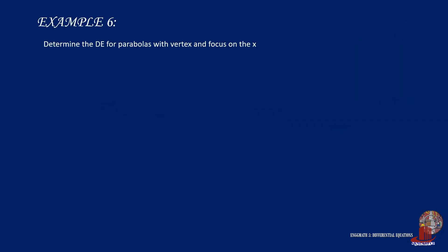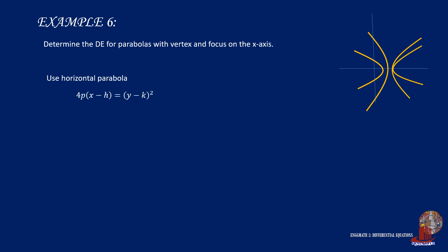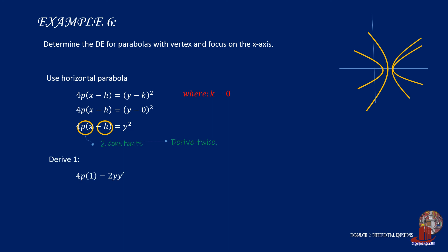For the last example: Determine the differential equation for parabolas with vertex and focus on the x-axis. With vertex and focus on the x-axis, we draw a horizontal parabola: 4p times x minus h equals y minus k squared. With vertex on the x-axis, k equals 0, giving 4p times x minus h equals y squared. Since p and h are constants, we derive twice. The first derivation gives 4p times 1 equals 2y y-prime, simplifying to 2p equals y y-prime. Applying the product rule and deriving again gives 0 equals y y-double-prime plus y-prime squared, or y y-double-prime plus y-prime squared equals 0.